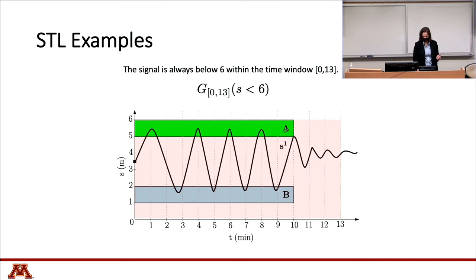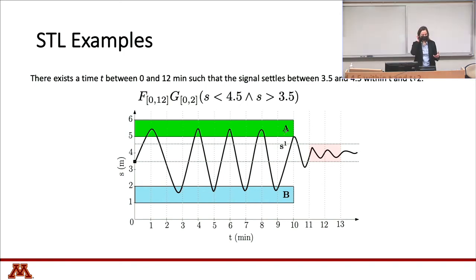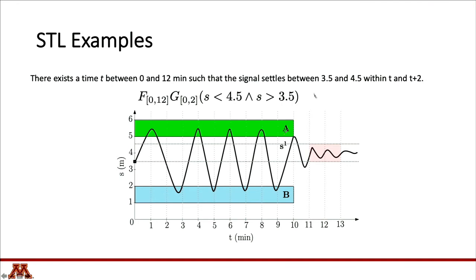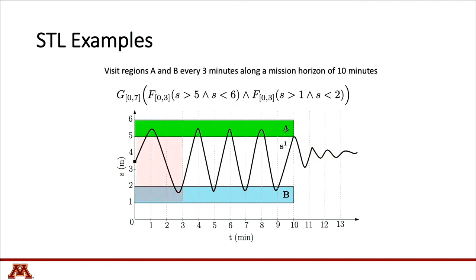We can also create more complex specifications using nested operators. For example, there exists a time t between 0 to 12 such that the signal stays between 3.5 and 4.5 in the following two time steps. We can also define periodic behaviors, such as: every three time steps, my signal must visit regions A and B. A shifting highlighted window ensures the signal always visits both regions within that window.